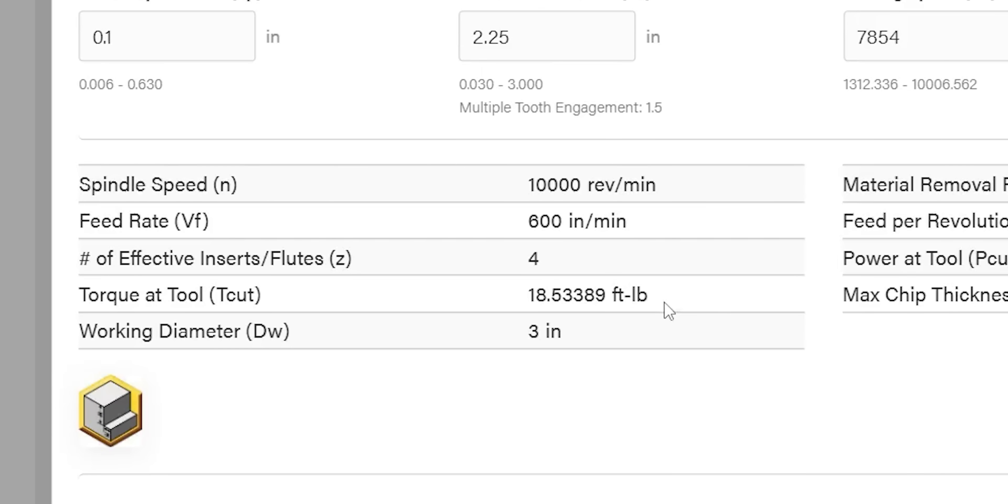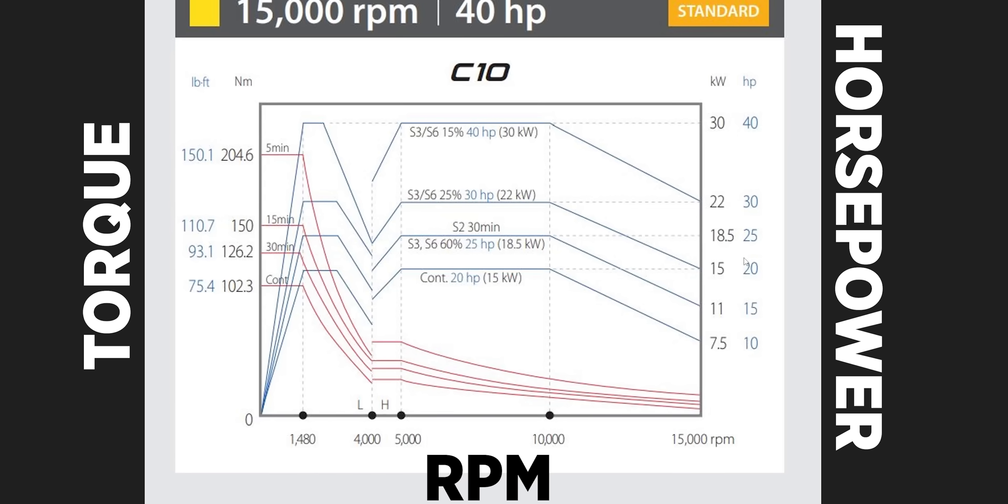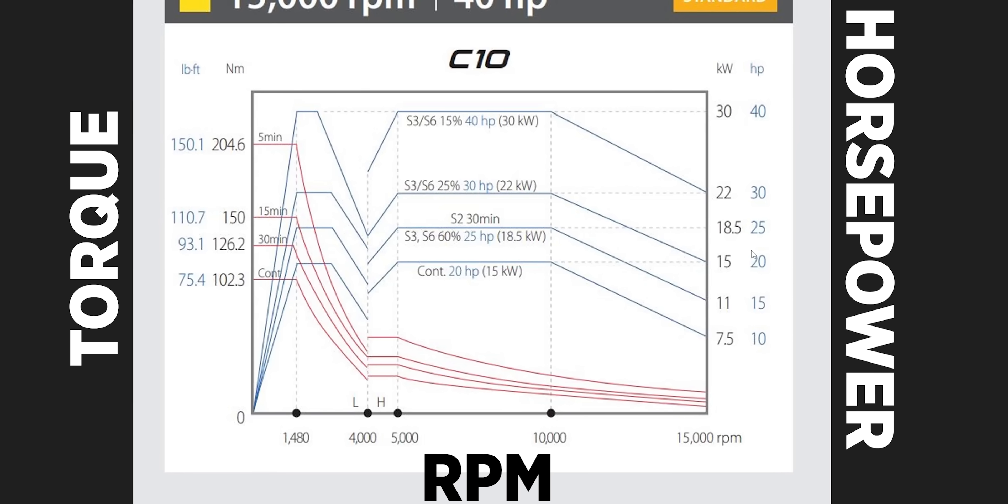600 inches a minute, we're going to need 18 and a half foot pounds of torque and over 35 horsepower. So we're still below the top line, but we're really starting to push the machine here.